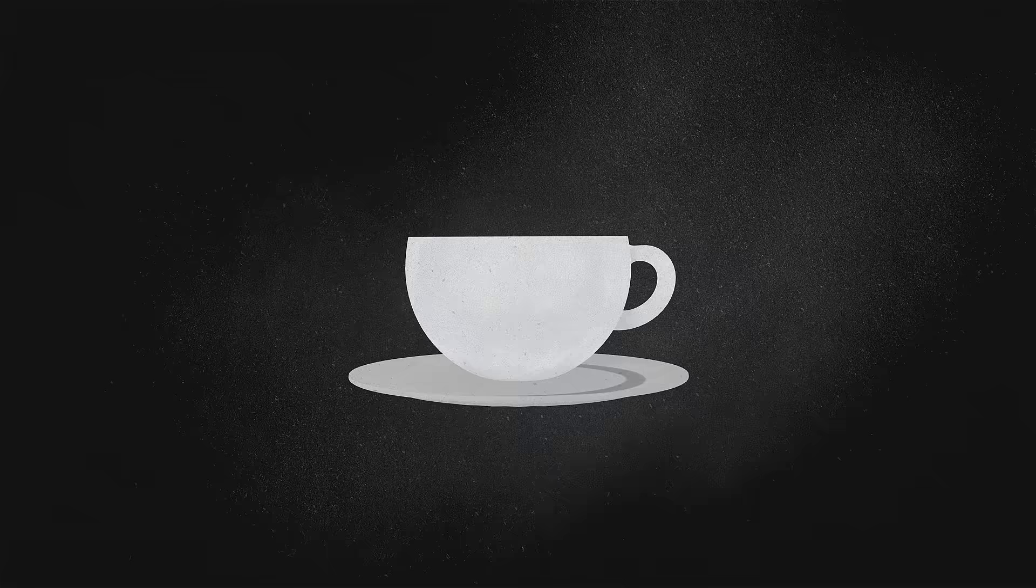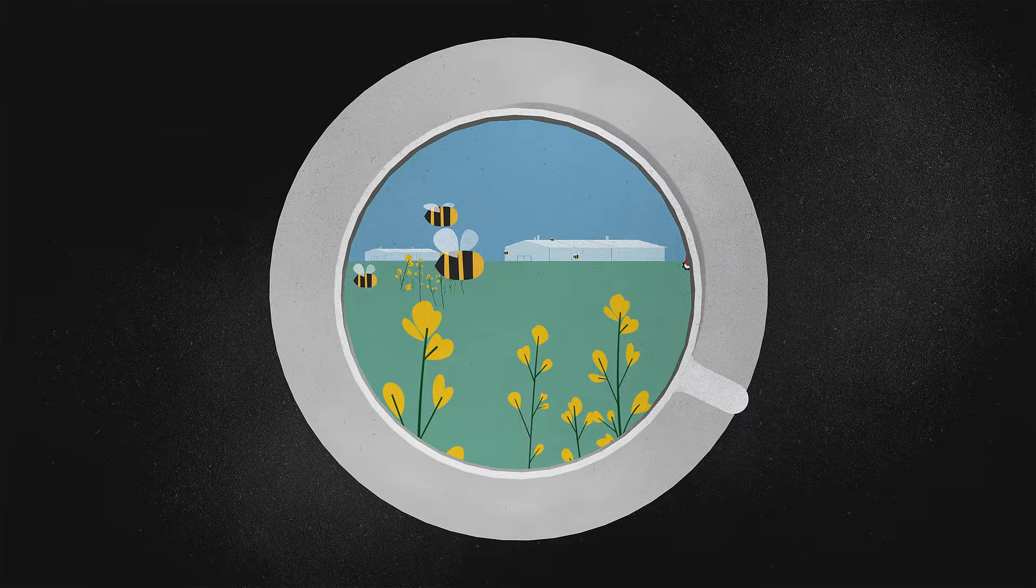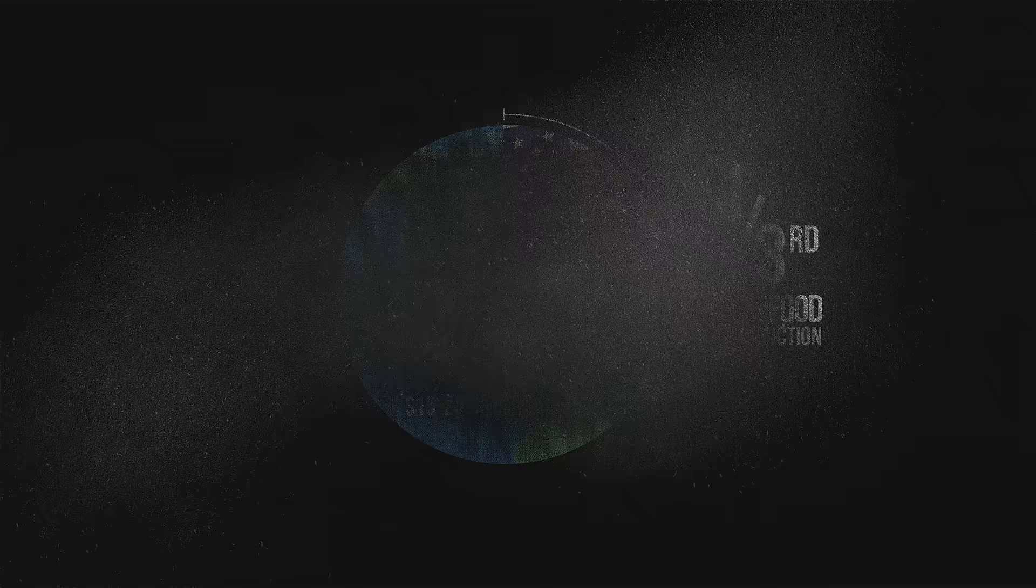The most frightening thing about this mystery isn't that we'll have to go back to using regular sugar in our tea. We farm bees for their honey, but they also pollinate our crops on an industrial scale, generating over a third of America's food production this way. So, how can we find the culprit behind this calamity?